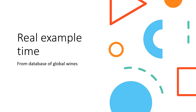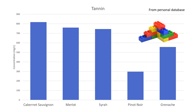Now for some fun — let's look at actual examples comparing different varieties. The data comes from a global database where ETS has analyzed 200 finished wines. Looking at tannin — the structure — comparing Cab, Merlot, Syrah, Pinot, and Grenache. These are average values from this database. Cab is the highest. Merlot is a little lower but can still have a lot of tannin. Syrah is nearly the same as Merlot. Pinot Noir has way less structure. And Grenache is significantly lower than the others, but still has more than Pinot.